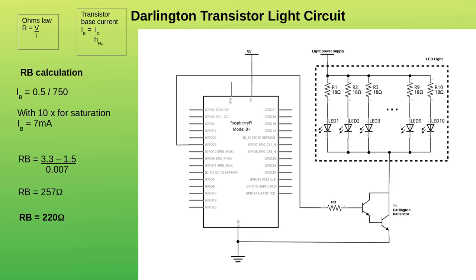So we just need to work out the base resistor, RB. First, we need the current at the base, which is 0.5 amps, divided by HFE of 750, giving 0.7 milliamps. Adding the 10 times factor to ensure saturation gives a base current of 7 milliamps. We can now use Ohm's law to work out the value of the resistor using 3.3 volts for the Raspberry Pi GPIO and 1.5 volts dropped across the Darlington transistor. This works out a little under 260 ohms. The 220 ohm resistor is a good fit here, so I'll be using this one.